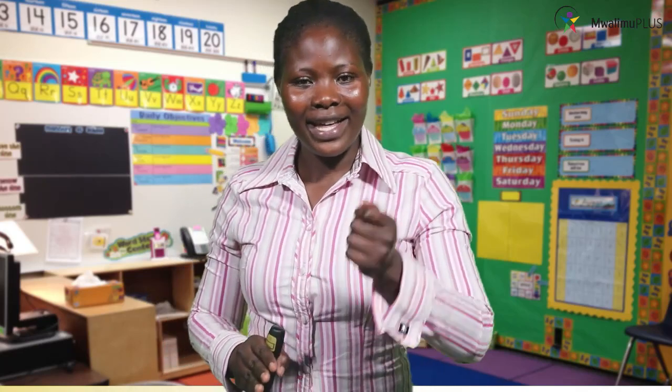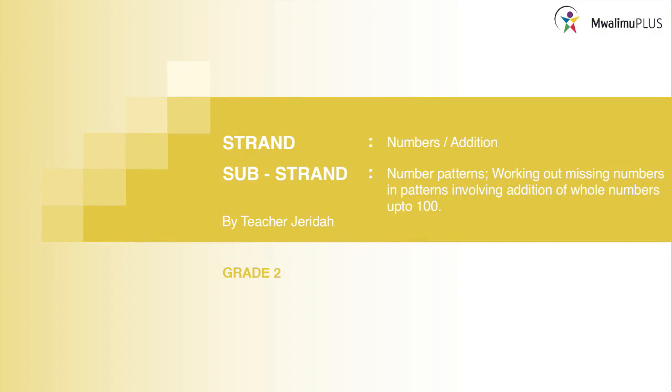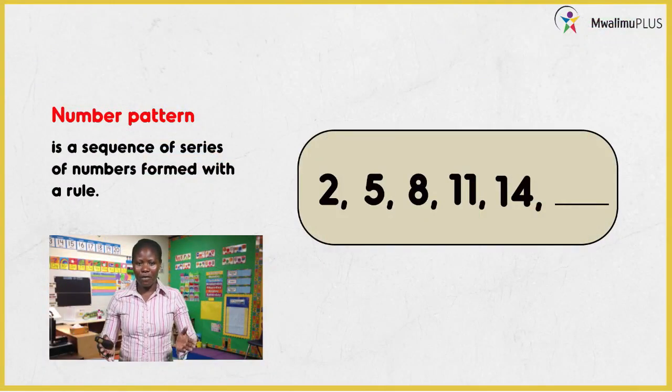Now, today we are going to learn about still addition — addition of numbers. But strictly, we're looking at number patterns. We want to work out missing numbers in patterns involving addition of whole numbers up to 100. First of all, what is a number pattern? A number pattern is a sequence or series of numbers formed with a rule.